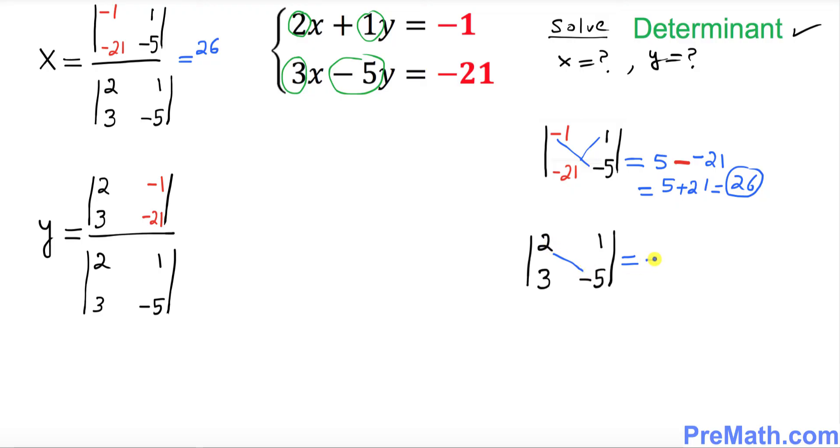2 times negative 5 is negative 10. And right after that one I want you to put a minus takeaway sign. And then I want you to cross multiply the other way around. We are crisscrossing. So 1 times 3 is 3. That is going to give us negative 13. So our determinant of the bottom one turns out to be negative 13.